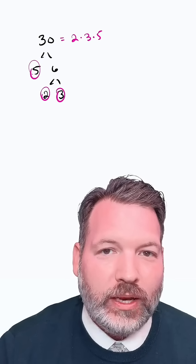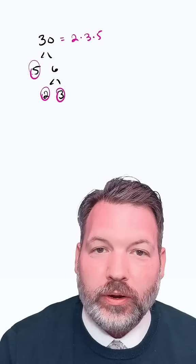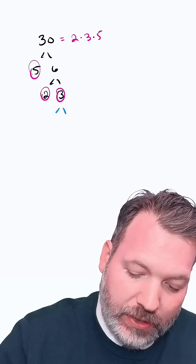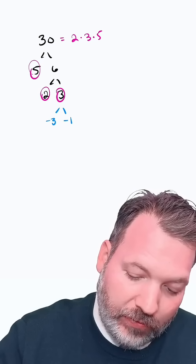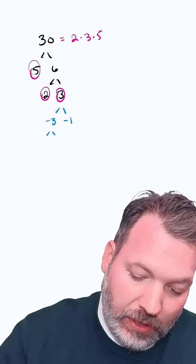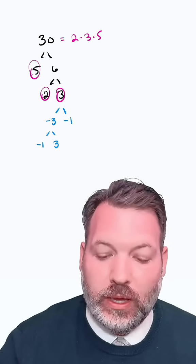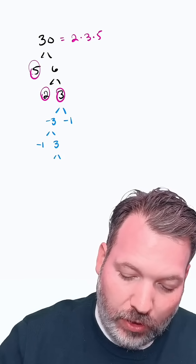Similarly, if you let negative 1 get involved, things can get kind of weird. 3, for example, we might write as negative 3 times negative 1. Then that negative 3 we could write down again as negative 1 times positive 3. And we can keep doing this for as long as we, again, want to be annoying.